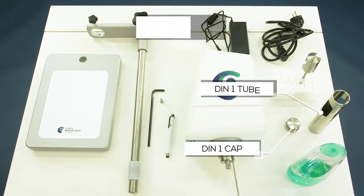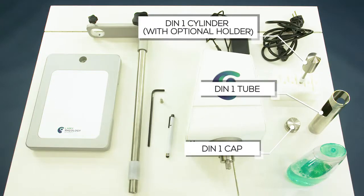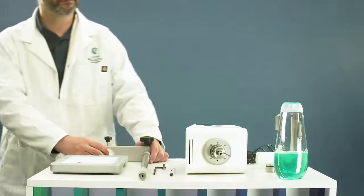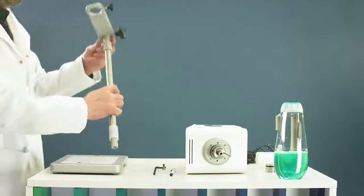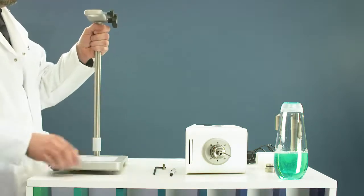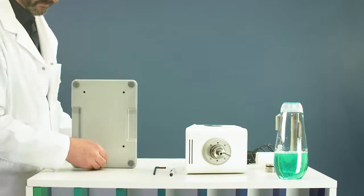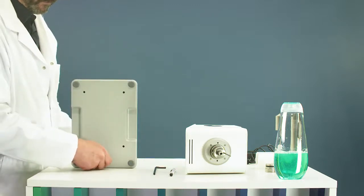Unpack all accessories from the box according to your configuration. Mount the stand to install the viscometer. Present the rod with the arm on the lower plate and fix the rod with the provided screw.